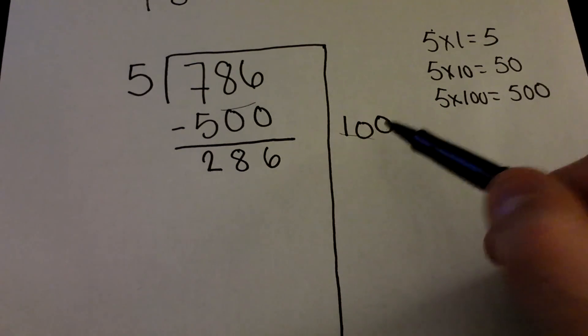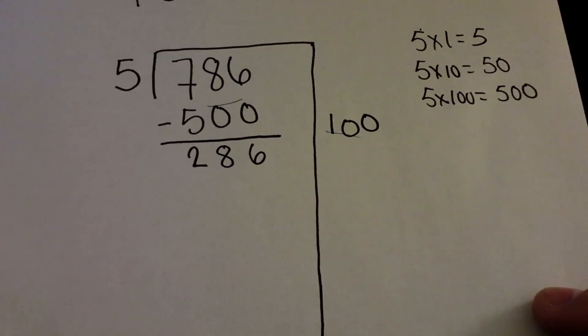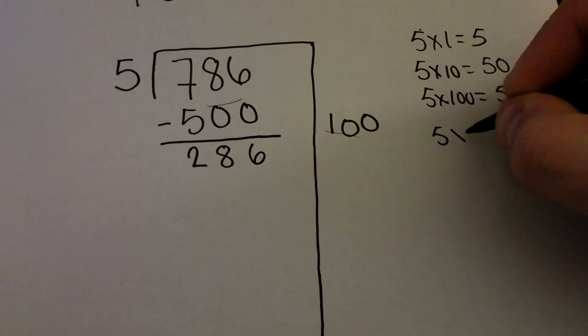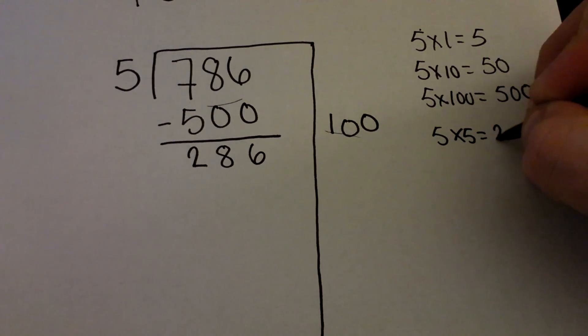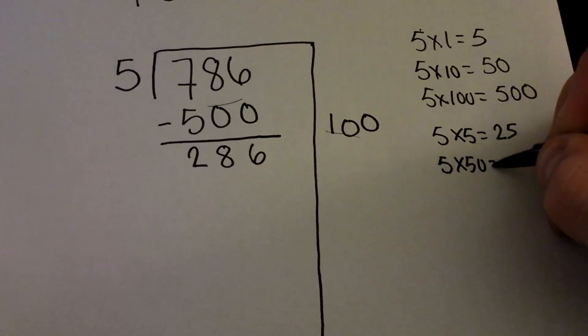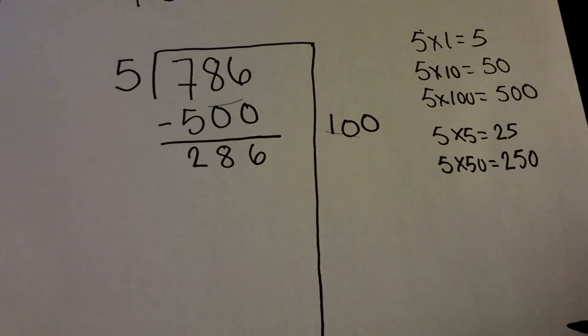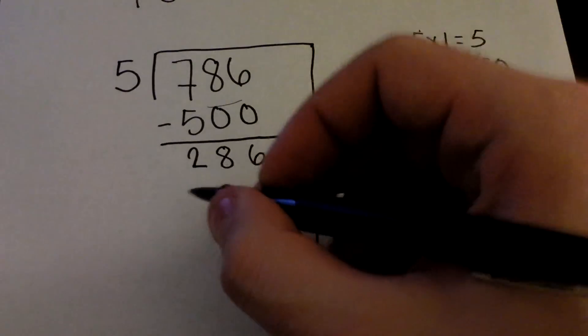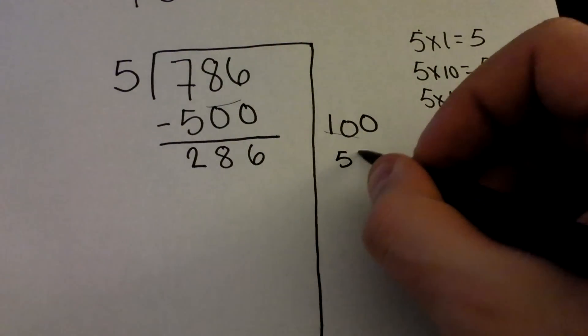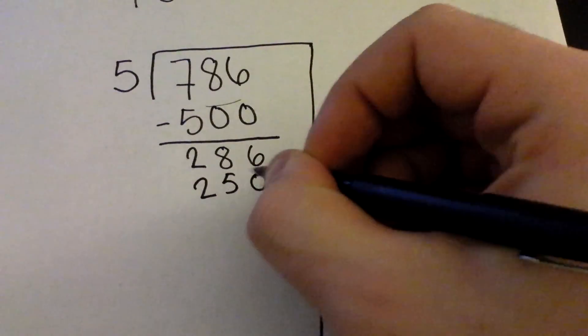Reminder, we've already taken out 100 groups. Again, we're going to capitalize on our great multiplication skills. We know 5 times 5 equals 25. So 5 times 50 must equal 250. We can then take out 250 or 50 groups of 5 from 286.